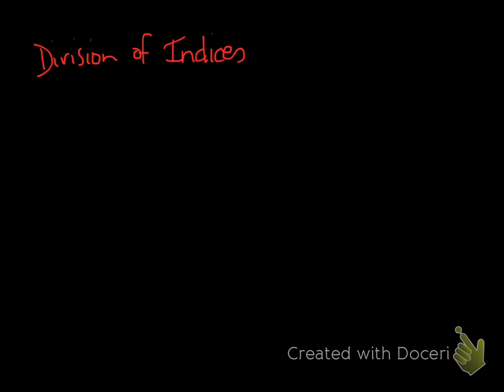In this tutorial I want to talk about the division of indices. In a previous video I spoke about the multiplication law of indices, or what happens when we multiply indices together. Here I want to talk about what happens when we divide indices by each other. I'm going to give you an example: 4 to the power of 6 divided by 4 to the power of 3.